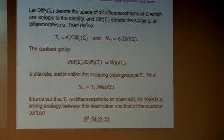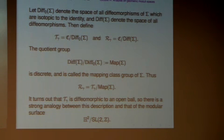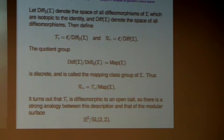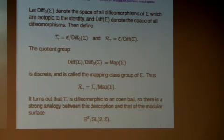On the other hand, the mapping class group is a discrete group. It acts properly discontinuously. There are some fixed points, but by and large it's a free action, and it's very much like the action of SL(2,Z) on the upper half plane. This analogy between the moduli space as the quotient of a ball by a discrete group is very compelling.